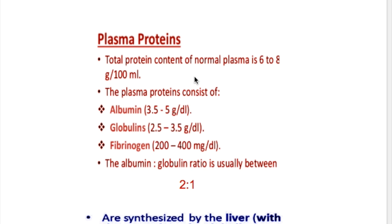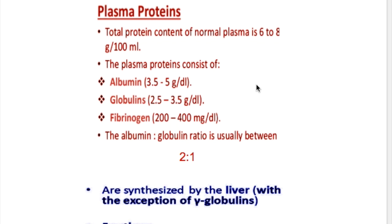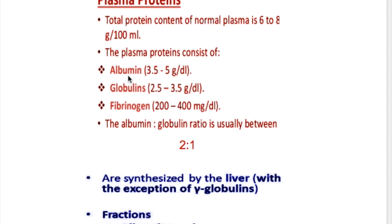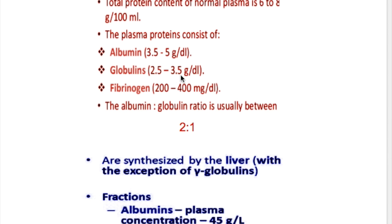What are the different levels of plasma proteins? The total plasma protein content is 6 to 8 grams per 100 ml, or 80 grams per liter. Albumin is about 5 grams per 100 ml or 50 grams per liter. Globulins are 3.5 grams per 100 ml or 35 grams per liter, and fibrinogen is 300 mg per 100 ml or 3 grams per liter.